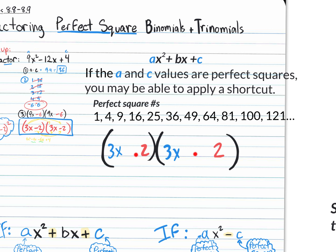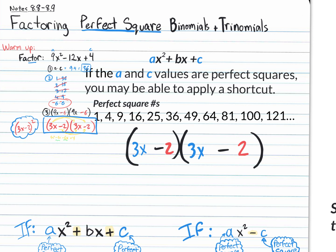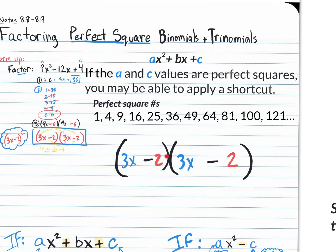Now think about the signs. Could they both be positive? Yes, because positive 2 times positive 2 gives positive 4. Could they both be negative? Yes, because negative 2 times negative 2 also gives positive 4. The signs cannot be different — if they were a plus and a minus, the middle term would cancel out. Since the middle term is negative, both signs should be negative. We still need to verify, and we already confirmed: (3x minus 2)(3x minus 2) is correct.